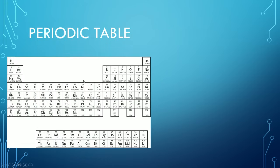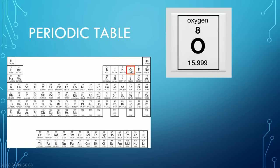So this is a periodic table. The periodic table basically lists out all the elements that we know of — for example, we've got hydrogen here, helium here, and all sorts of things. The information the periodic table gives us is quite important. Let's take a look at the element oxygen — let's zoom that up.